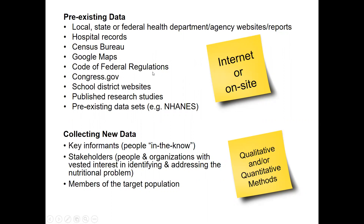Maybe you'll use Google Maps, or the Code of Federal Regulations, which outlines how programs should be carried out — like school meals, congregate meal programs, or WIC. Maybe you'll look at congress.gov to find policies related to your needs assessment, or school district websites for information about the school itself, its size, and the number of students being served by free and reduced price lunch, which indicates the number of low-income families within that school district.